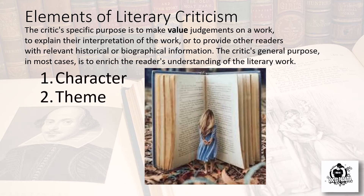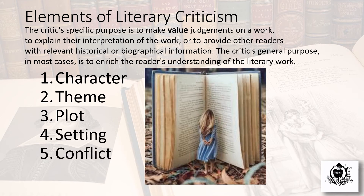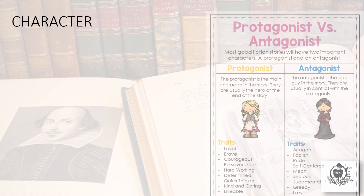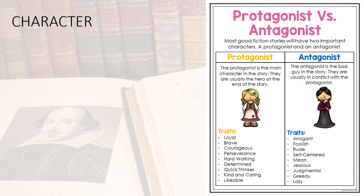The elements of literary criticism are: character, theme, plot, setting, and conflict. The first element is character, and there are two main classifications: the protagonist and the antagonist. The protagonist refers to the hero of the story, and the antagonist is the one antagonizing the hero — the villain — in the literary piece.